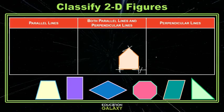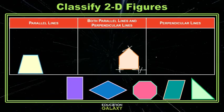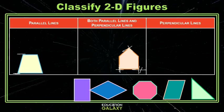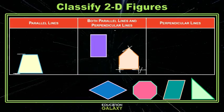Our trapezoid, the next figure, appears to have one set of parallel lines. That's just this one and this one. And then the next figure, the rectangle, has both. It has four right angles, so those are all perpendicular lines. And then opposite sides are parallel by definition.